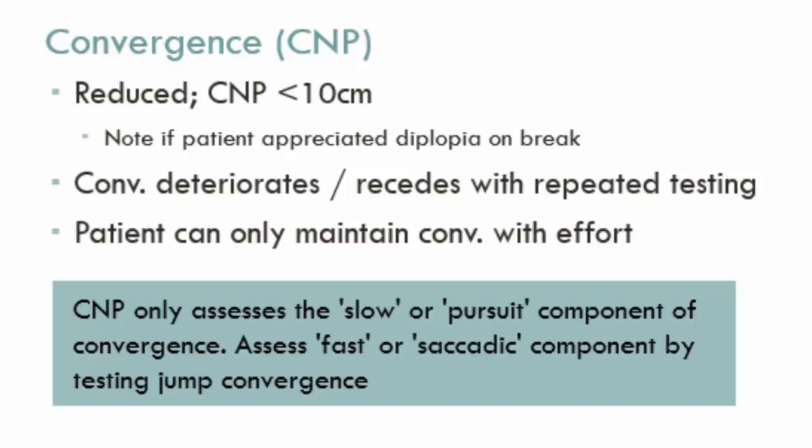Another possibility is that the patient can converge quite close to their nose but struggles to maintain that, becoming symptomatic or requiring great effort. With the RAF gauge we measure the smooth pursuit component of convergence. It is also worthwhile assessing jump convergence — having the patient look into the distance and then quickly at near — to see how accurately and comfortably they can change their convergence, since we have exercises that can address issues with jump convergence.